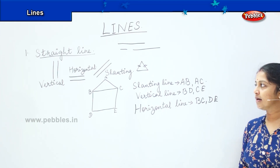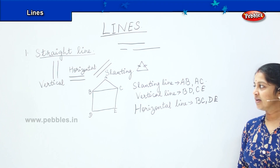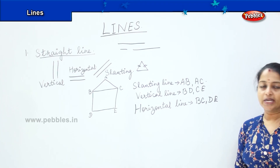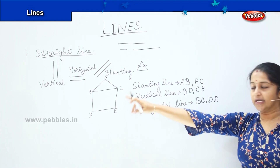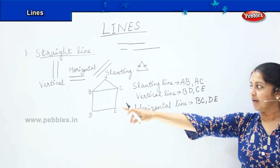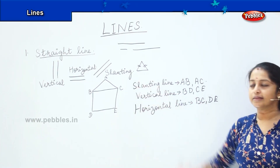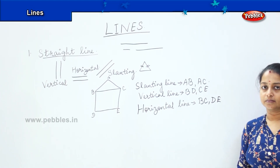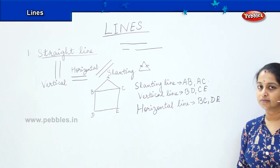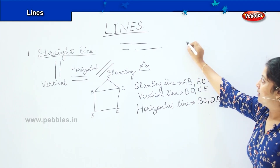Are you clear with the types of straight lines? Let's revise the three types of straight lines: the first one is the vertical line, the second is the horizontal line, and the third one is the slanting line.